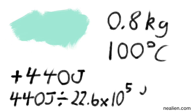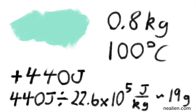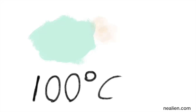Now we have 0.8 kilograms of water that's liquid at 100 degrees Celsius. If it gains more energy, that's going to turn into steam. So we take the 440 joules of excess energy and divide it by the latent heat of vaporization to find the mass of water that turns into steam. That steam is at 100 degrees Celsius because it only changes state, not temperature. Out of the 0.8 kilograms of liquid water, 19 grams of it turns into steam, also at 100 degrees Celsius. So most of the water is liquid, and it's all at 100 degrees Celsius.